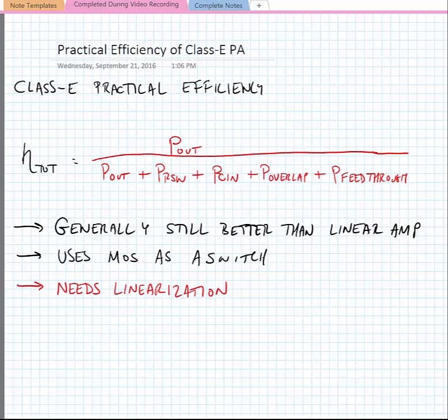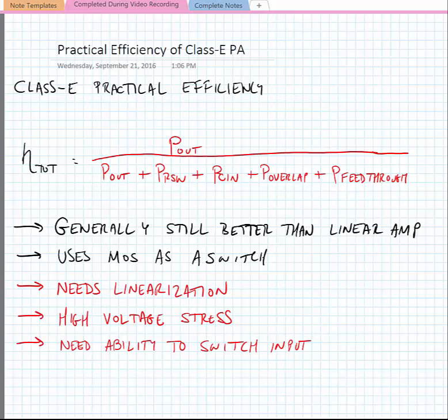But it does have some drawbacks. This power amplifier needs linearization. You cannot pass a signal that has amplitude modulation through this amplifier and maintain good fidelity with that signal without using some linearization circuit. It also has high voltage stress on the drain of the transistor. And we need the ability to switch the input.